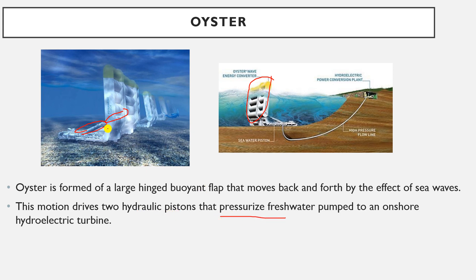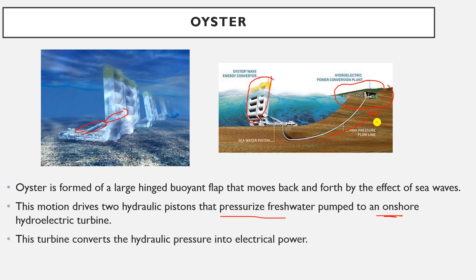These two hydraulic pistons pressurize fresh water inside a pipeline, which is pumped to an onshore hydroelectric turbine. The hydroelectric power station converts this high-pressure fresh water into electrical power, converting the hydraulic pressure into electrical power.